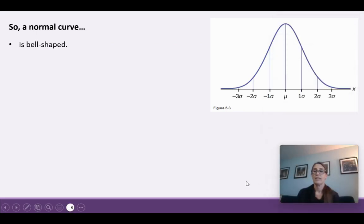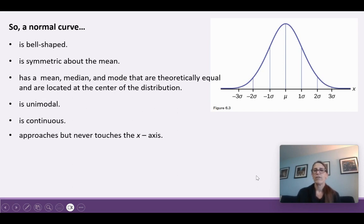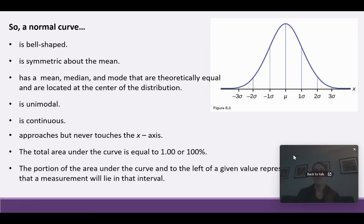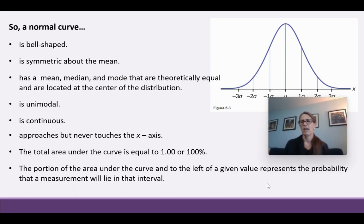A normal curve is bell-shaped. The mean is in the middle, with one, two, and three standard deviations marked to the right, and negative z-scores representing values below the mean on the left. It's symmetric around the mean, with mean, median, and mode theoretically equal at the center. It's unimodal and continuous — it approaches but never touches the x-axis. The total area under the curve equals 1 or 100%, and the area to the left of a given value represents the probability that a measurement lies in that interval.